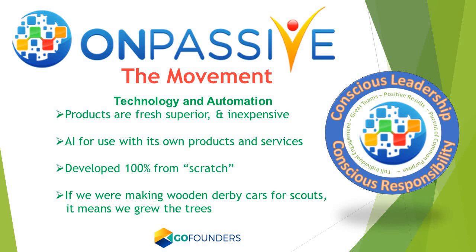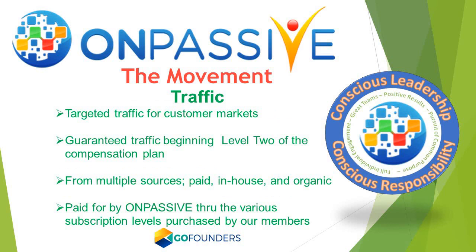Rather, it's part of the structure and part of the process of nearly all of the products that OnPassive offers. OnPassive has created its technologies 100% from scratch. We don't use any second-hand material and they don't have any third-party contractors. For digital products from scratch, we're talking about writing the code. If we were making wooden derby cars for the Boy Scouts or Girl Scouts, it means we went out and grew the trees. You're going to see some of this automation through the traffic that's generated, because OnPassive is going to provide targeted traffic for all its customers and members.